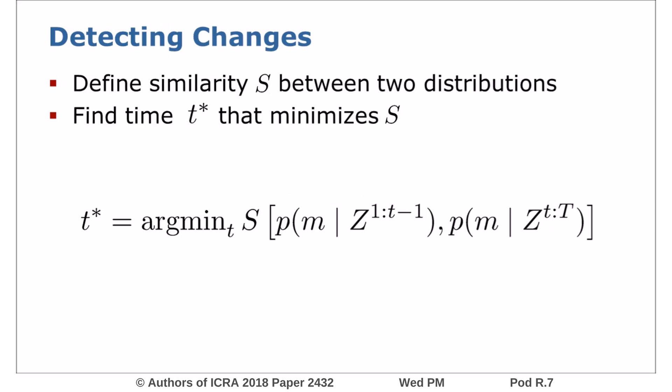We define a function s, which scores the two posteriors according to their similarity. This can be in terms of entropies, the Bayesian information criterion, or other probabilistic quantities. Finally, we have to find the time t that minimizes this function.